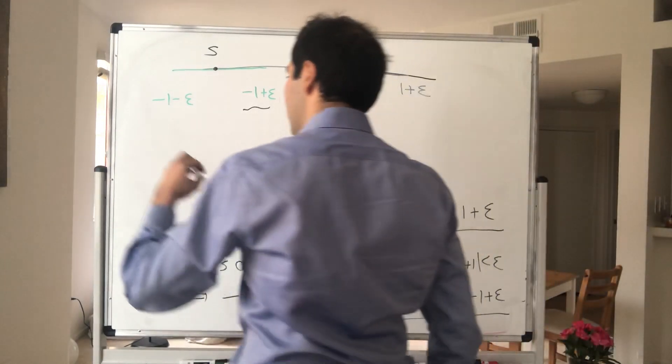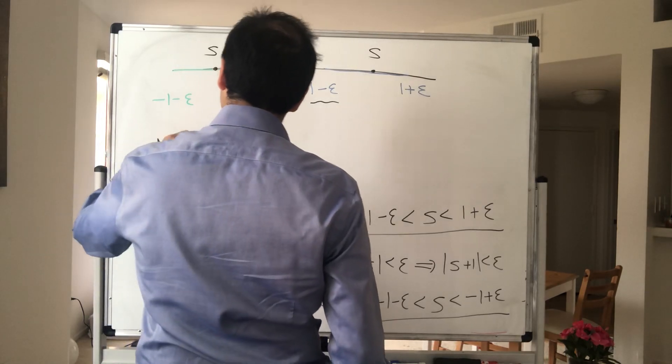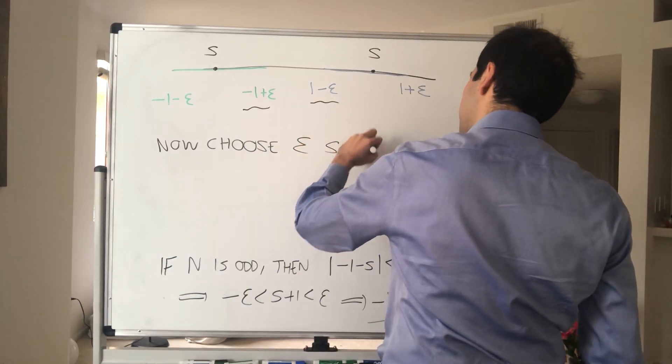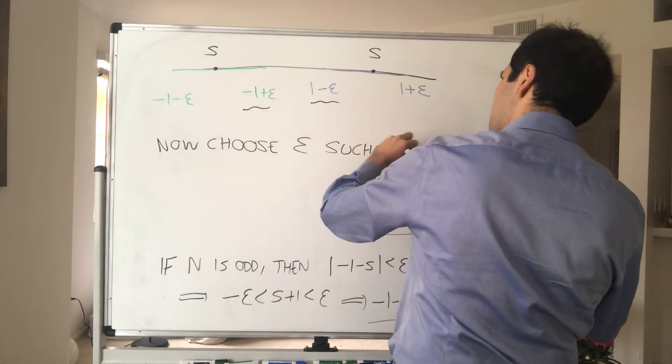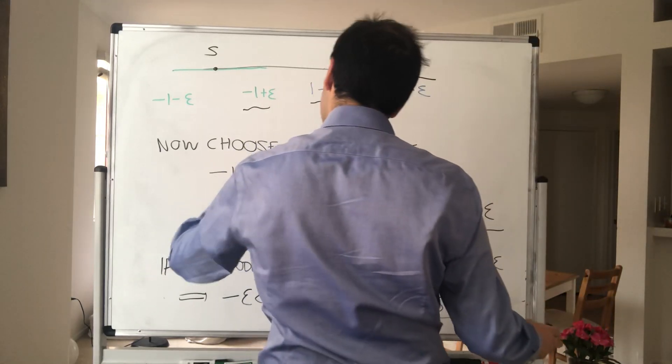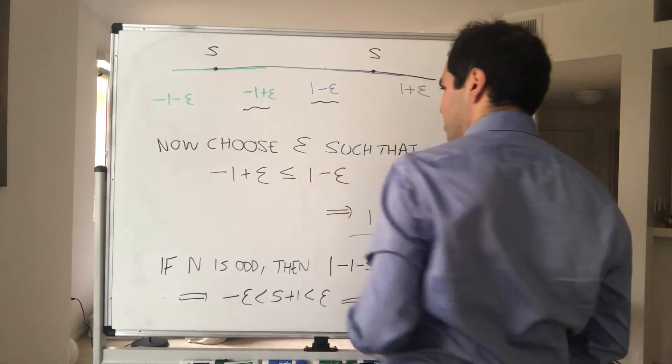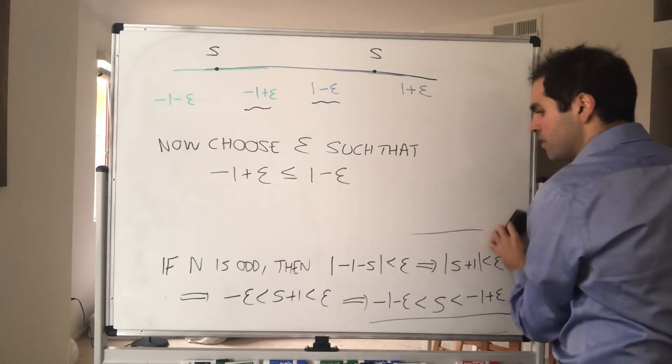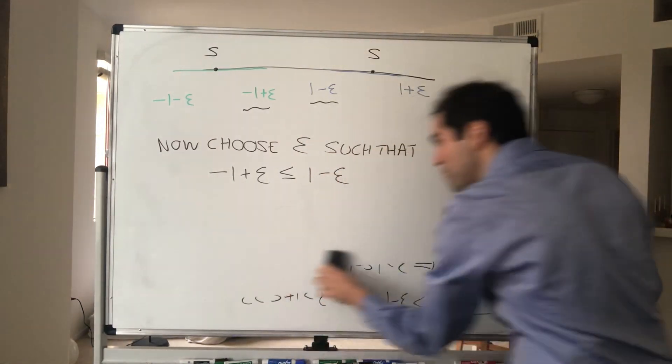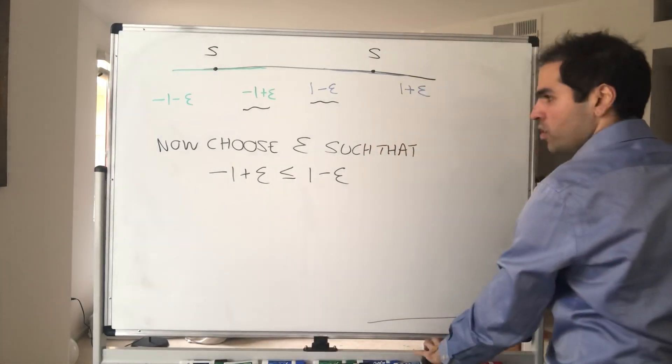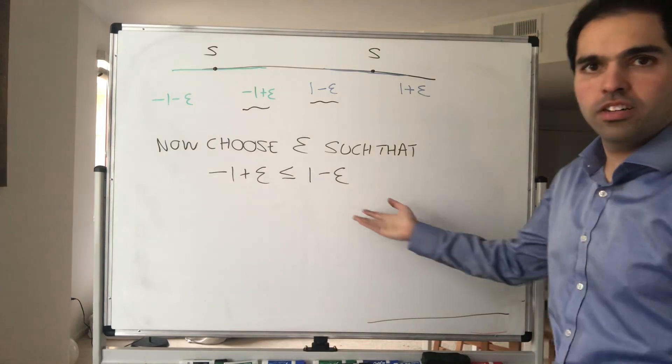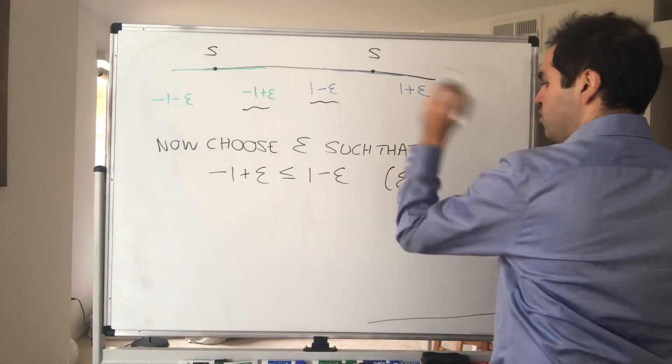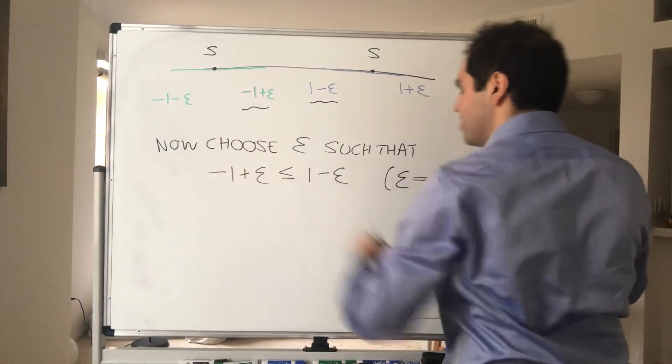So remember again, epsilon was to be announced. So now choose epsilon such that -1 + epsilon ≤ 1 - epsilon. And I guess I should emphasize epsilon has to be positive. So for example, epsilon equals 1 works. But there are many other choices for epsilon. In fact, anything less than or equal to 1 works. So the book just tells you this works, but really I want to emphasize any value works.